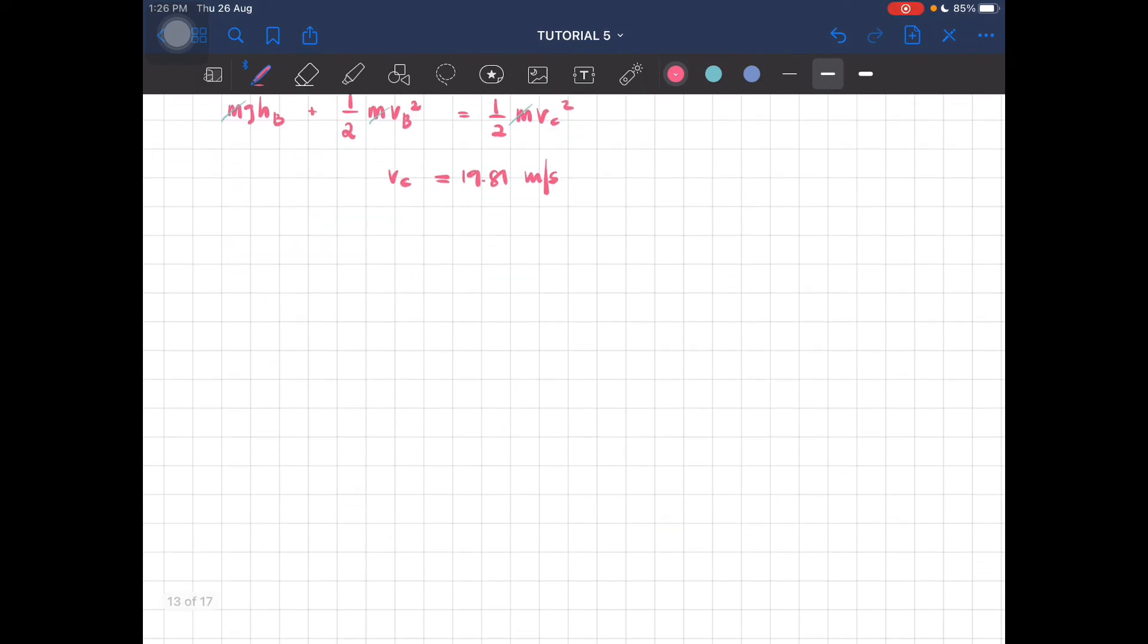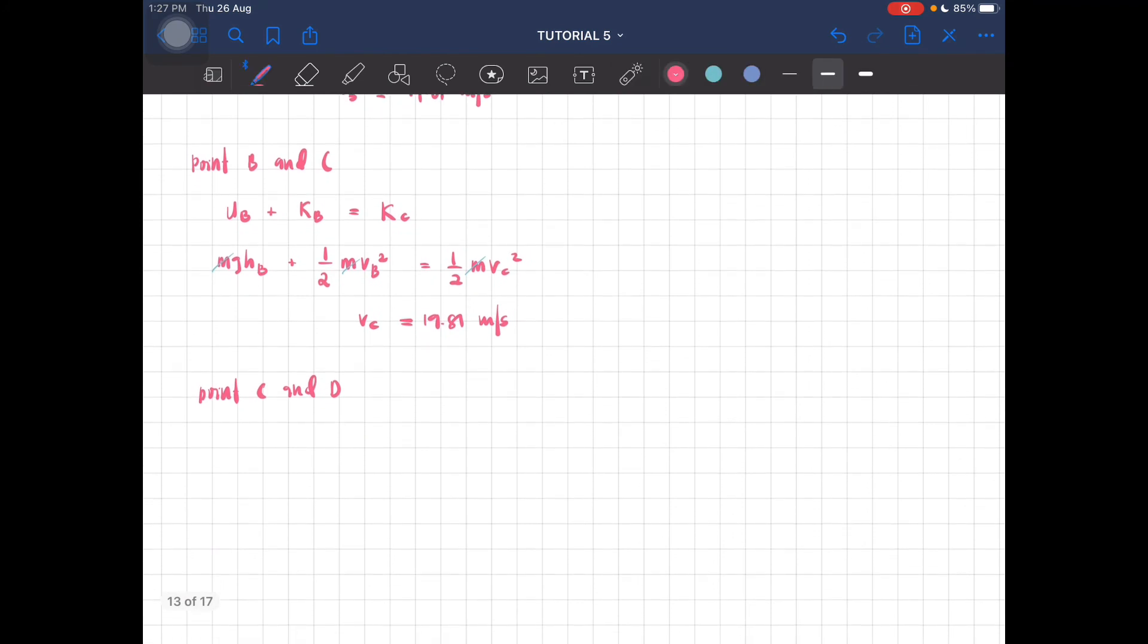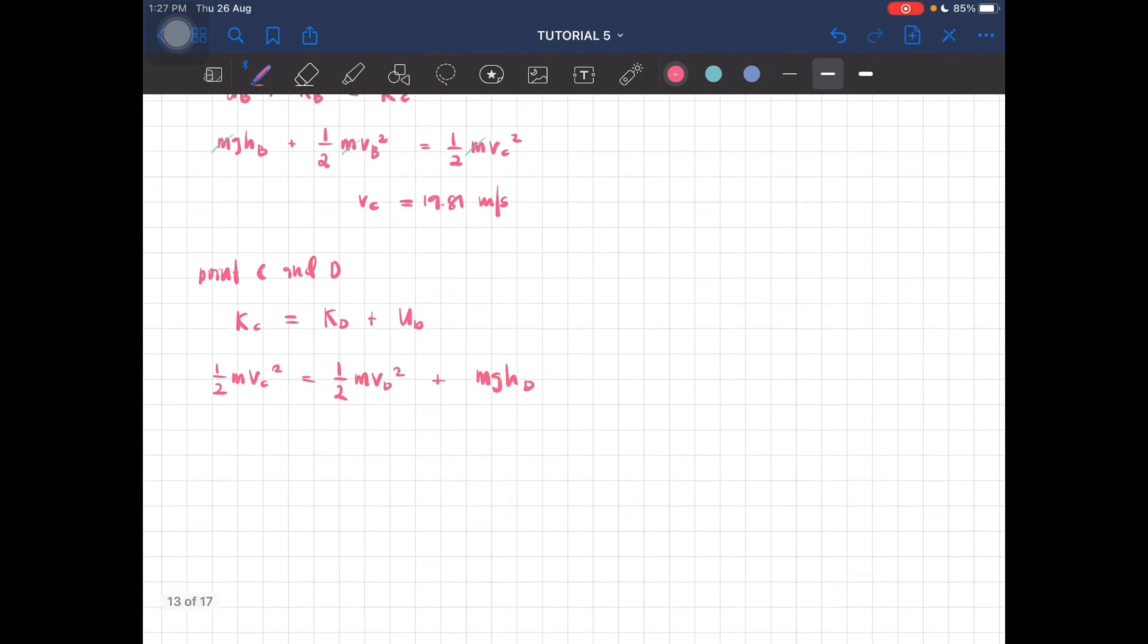And then do again for point C and D. Let's look at point C and D. C has kinetic energy. And then as it goes here, there is both kinetic and potential energy. This is potential energy. And then it moves to this point known as D, kinetic energy. So this is KC equal to KD plus UD. So this is half M VC squared equal to half M VD squared plus MGHD. So cancel this value of M. And then this is just rearranging and substitution. So you should be getting the velocity at point D to be equal to 15.97 meter per second.